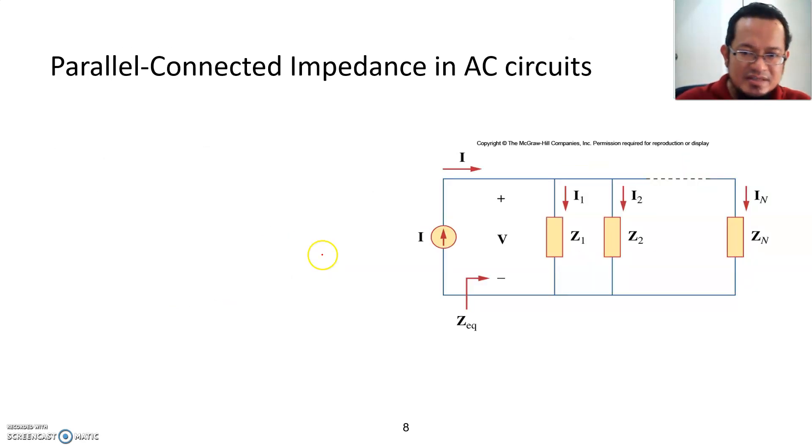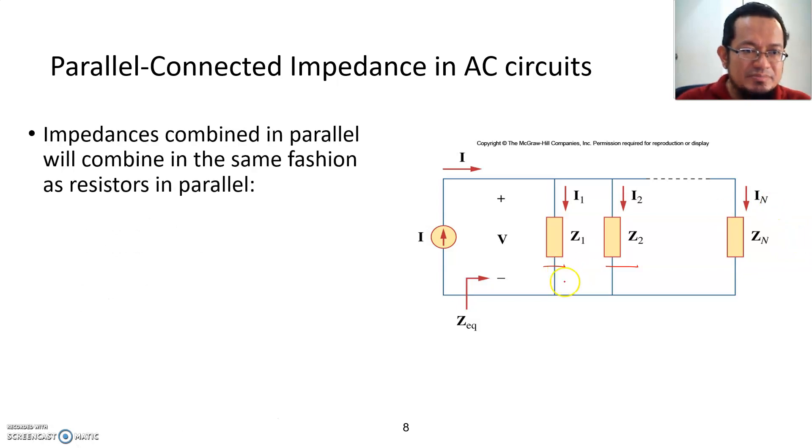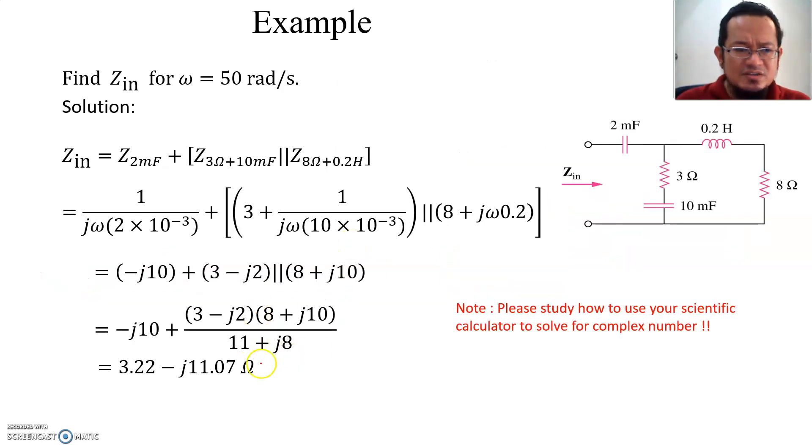For parallel connected impedance, let's say you have impedance connected in parallel Z1, Z2, and however many impedances. Impedance combined in parallel will combine in the same fashion as resistors in parallel. The formula for impedance in parallel is 1 over equivalent impedance equals 1 over the first branch of the parallel impedance plus 1 over second branch and so on. Let's take a very short example. If you look at this circuit here, you have a combination of series and parallel impedances. In this branch here you have a 0.2 henry inductor and 8 ohms in series, and you have resistor and capacitor in series. These two combined together become parallel equivalent, and combined with 2 millifarad in series.